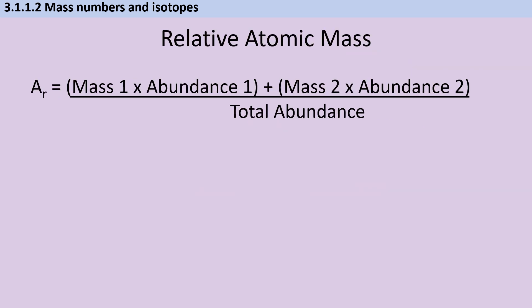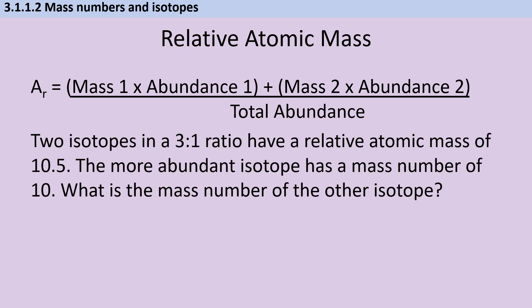Now that I'm comfortable working with this formula, I can start to use it to work out masses and abundances from the relative atomic mass. In this question, I have two isotopes in a three to one ratio which have a relative atomic mass of 10.5. The more abundant isotope has a mass number of 10 and I need to work out what the mass number of the second isotope is.